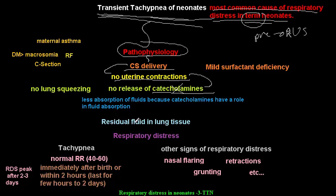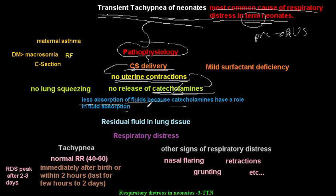The baby in his mother's uterus is swimming in amniotic fluid — his lung is full of fluid. After birth, catecholamines play an important role in absorption of these fluids. So if we have caesarean section delivery, we will have no or little uterine contractions, and that will lead to no release of catecholamines. The decrease in catecholamines leads to decreased absorption, less absorption of fluid, and that will lead of course to residual fluid in the lung tissue.